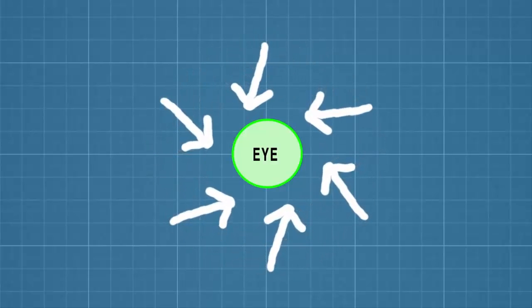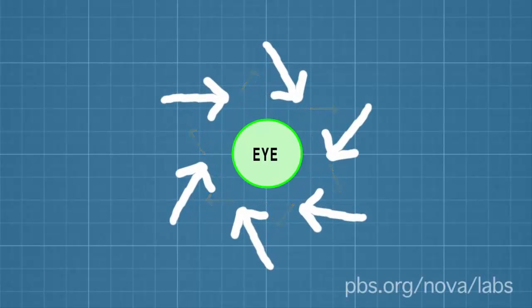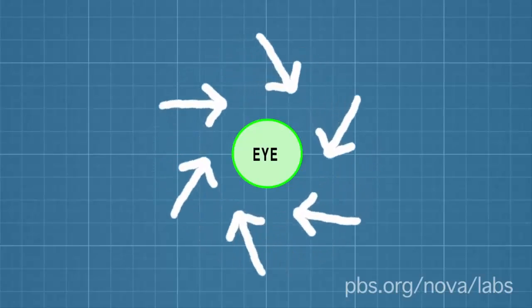In the southern hemisphere, where the Coriolis effect pulls air to the left, the opposite happens. Storms spin around the eye in a clockwise manner.